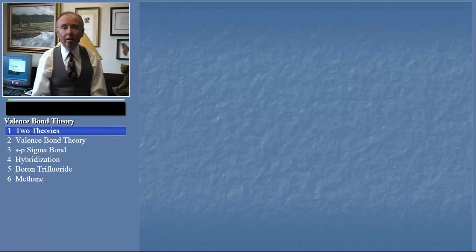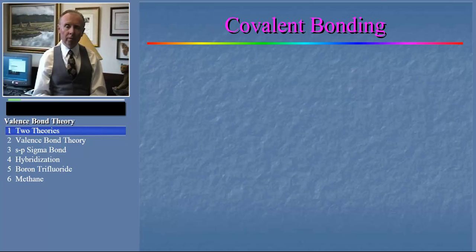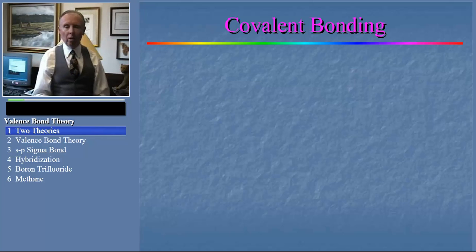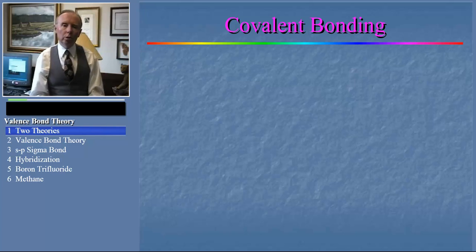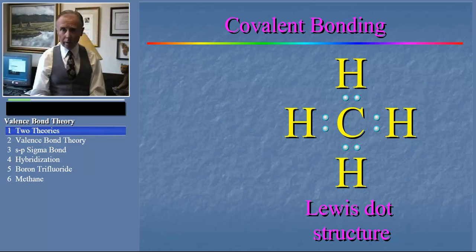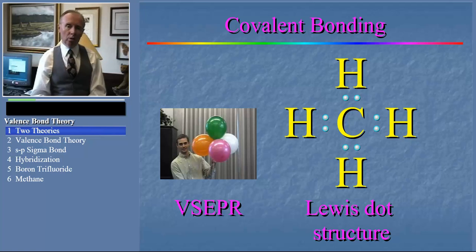Hi again. Today we are going to talk about bonding and covalent molecules. Remember, those are the types of species in which atoms share electrons to obey the octet rule. Now you might wonder what more there is to say about bonding in these kinds of molecules. We've already learned how to do Lewis dot structures, like this one, to show how electrons are shared, and we've used VSEPR theory to explain why the molecules adopt the shapes they do.